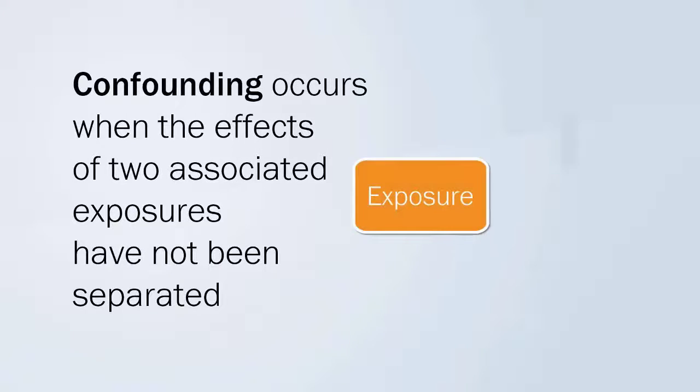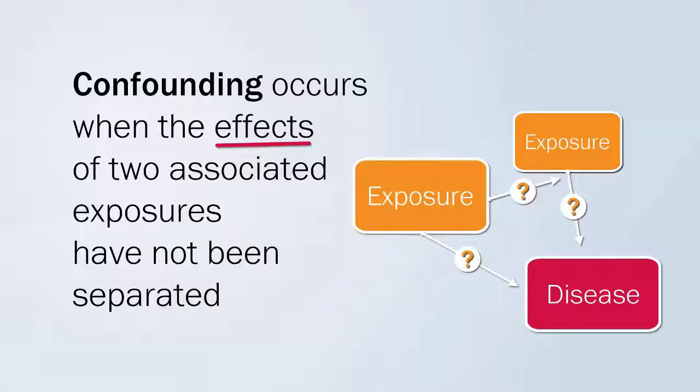So confounding occurs when the effects of two associated exposures, or risk factors, have not been separated, and it is therefore incorrectly concluded that the effect is due to one variable rather than the other.